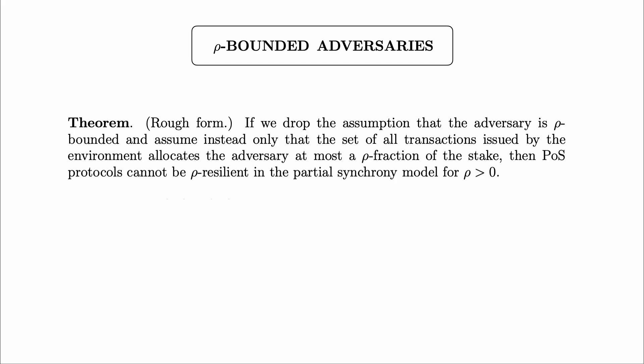What does this mean for proof-of-stake protocols? I'll state a rough form of a theorem. Basically, if we drop the assumption that the adversary is row-bounded and assume instead only that the set of all transactions issued by the environment allocates the adversary at most a row fraction of the stake, then proof-of-stake protocols cannot be row-resilient in partial synchrony for any row greater than zero. We can't deal with any adversary of nonzero size in partial synchrony in that case.